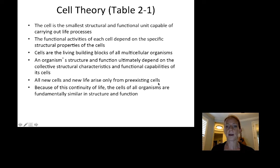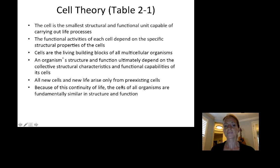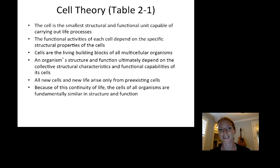All new cells and new life can arise only from pre-existing cells. Cells divide through the process of mitosis; sex cells divide through the process of meiosis. In either case, that is how new cells are made. Because of this continuity of life, the cells of all organisms are fundamentally similar in structure and function, although different specialized cells can be remarkably unique.